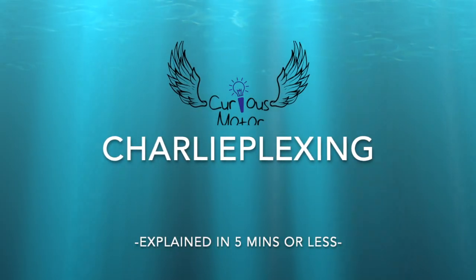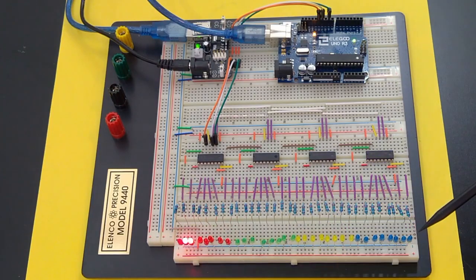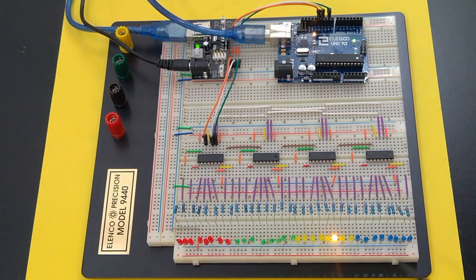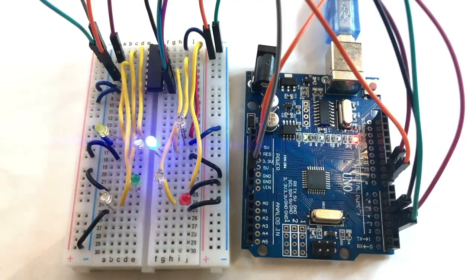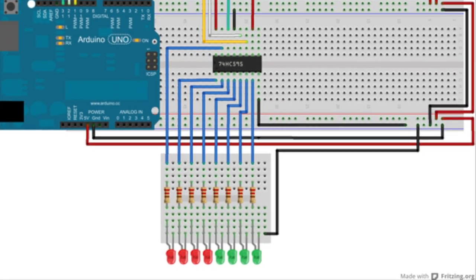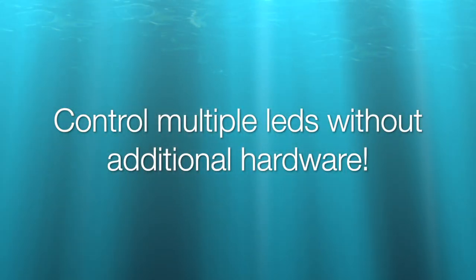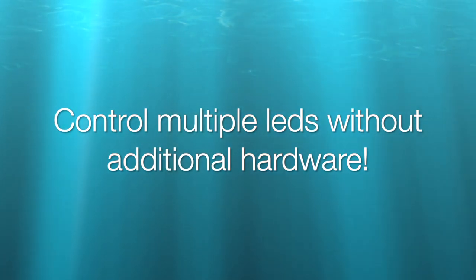There are a number of ways to control multiple LEDs with limited pins on the Arduino. All of them require some additional components such as shift registers or multiplexers. Charlie Plexing is an ingenious electronic hack that allows you to achieve the same without any additional hardware.